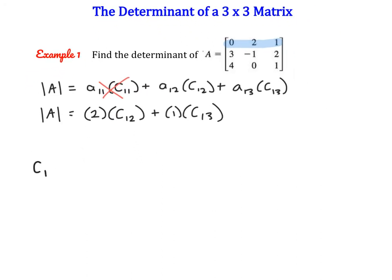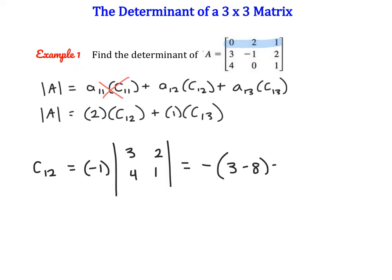To find the cofactor of (1,2), the sum of i and j is odd, which means I need to multiply the minor by negative 1. To find the minor, we take out all the numbers in that row and that column, leaving us with the 2x2 matrix: 3, 2, 4, 1. The determinant of that is 3 minus 8, which is negative 5. Multiplying by negative 1 gives positive 5. Don't forget about this negative — when the sum of i and j is odd, we multiply by negative 1.